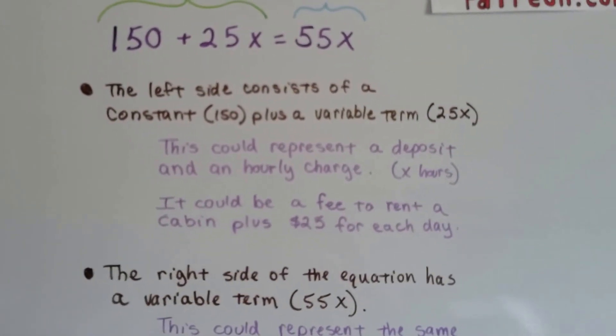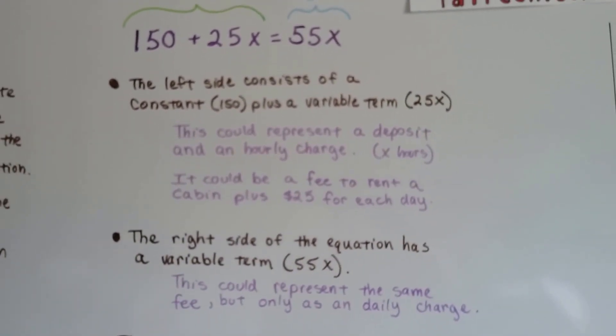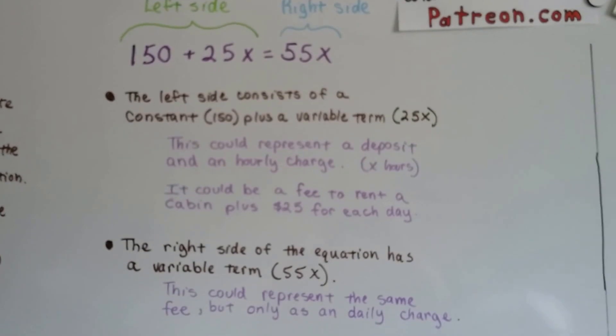The right side of the equation has the variable term 55x. This could represent the same fee, but maybe as a daily charge or an hourly charge.